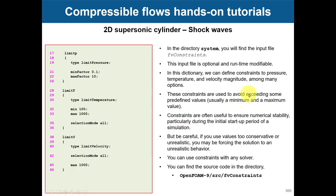There is also a new dictionary in the system folder called fvConstraints. What you do here is constrain the variables you are solving to specific minimum and maximum values. This is very useful when dealing with compressible flows. For instance, we put a limit on pressure using a mean factor of 0.1, limit temperature to between 100 K and 1000 K, and also limit the velocity magnitude.